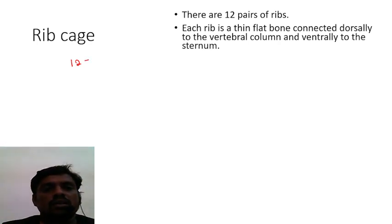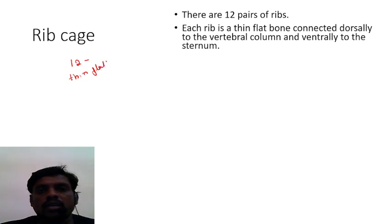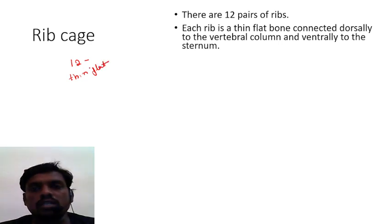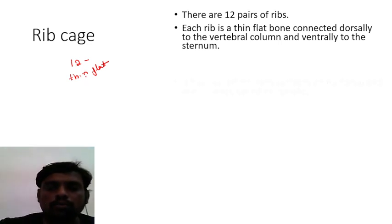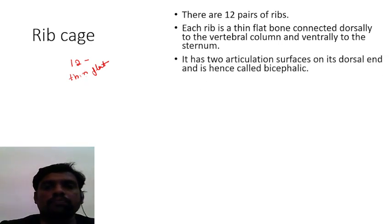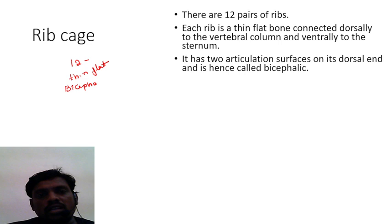Each rib is dorso-ventrally flattened and they are thin bones. They are connected dorsally to the vertebral column and ventrally to the sternum. Since each rib has two articulation surfaces, these rib bones are called bicephalic ribs.